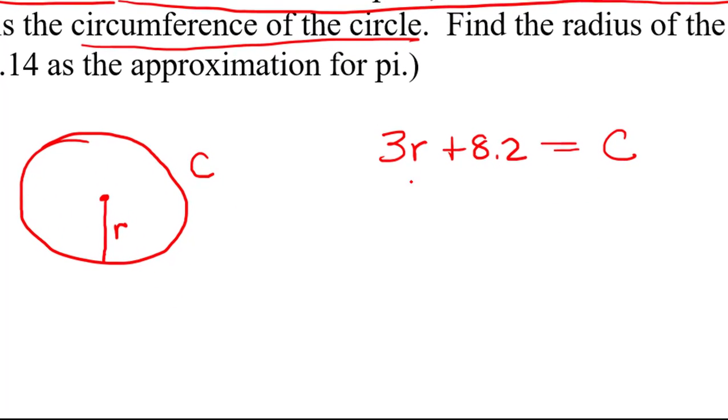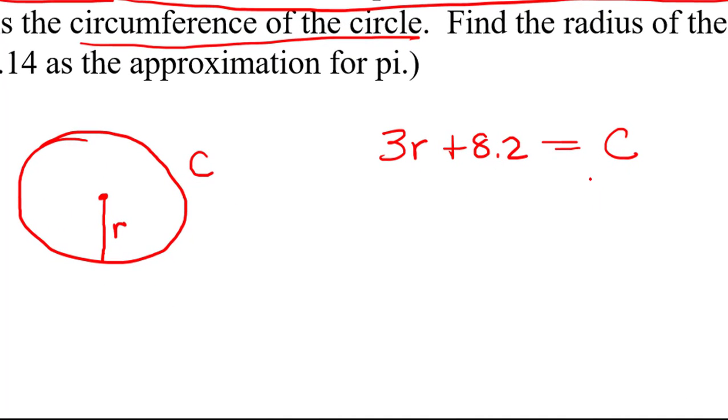Well we can't solve this equation to get the radius because there's two variables here. But remember we know that the circumference is 2 pi times the radius.